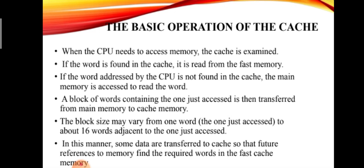The basic operation of the cache: when the CPU needs to access memory, the cache is examined. If the word is found in the cache, it is said to be a hit and it is read from the fast cache memory. That data will be used to read and process.